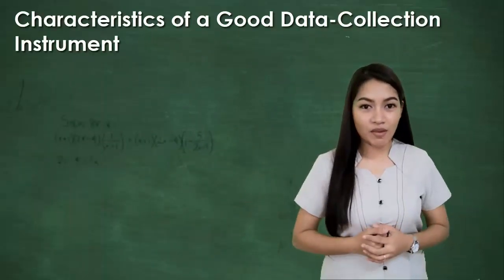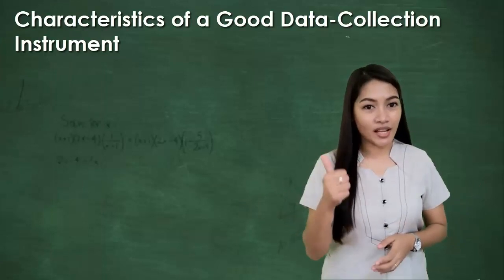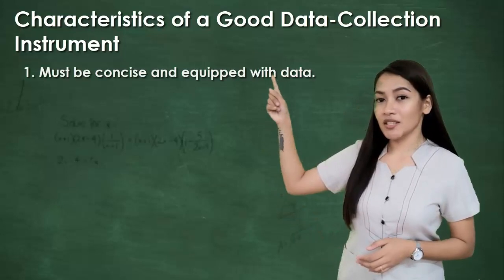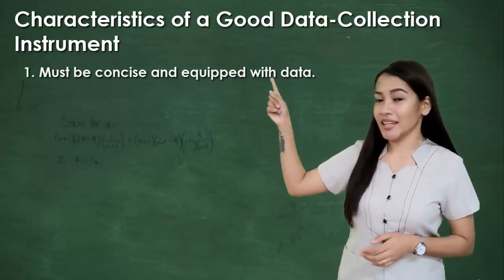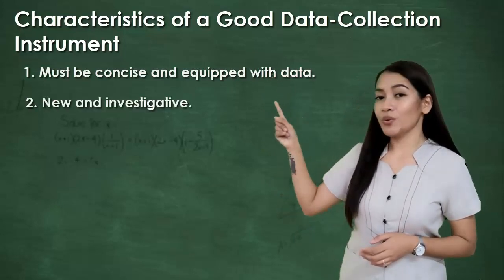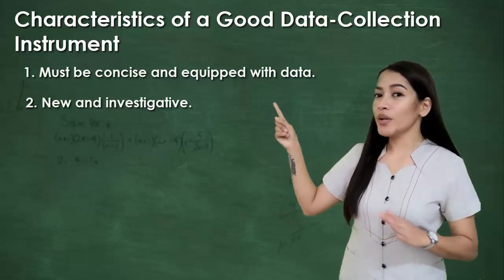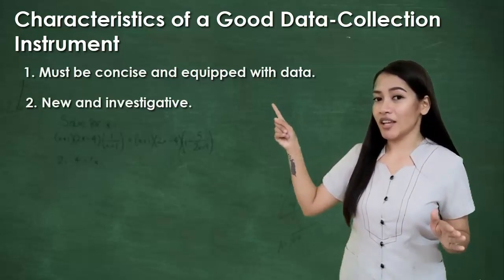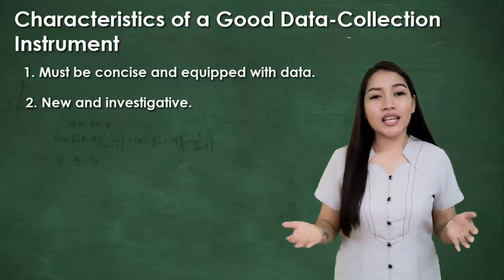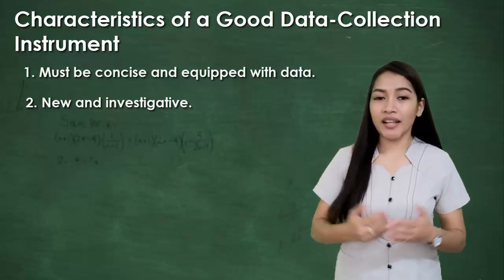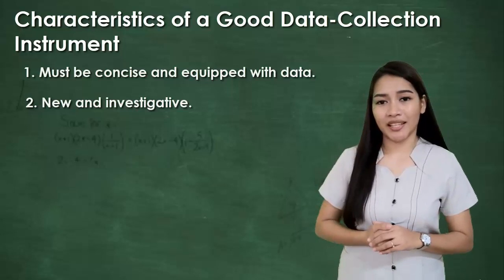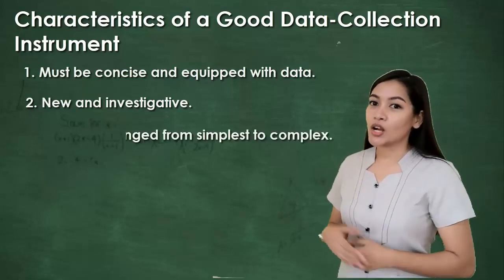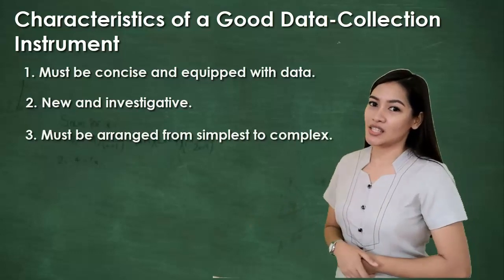Now let's talk about the characteristics of a good data collection instrument. One: it must be concise yet able to provide the needed data. Two: it seeks information which cannot be obtained from other sources like documents that are available at hand. Three: questions must be arranged in sequence from the simplest to the complex.